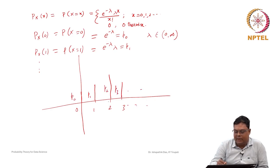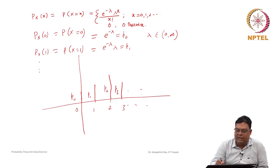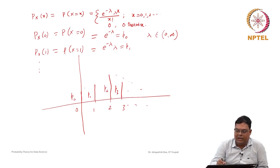If you draw the probability curve with the random variable values 0, 1, 2, 3 on the x-axis and probabilities p0, p1, p2, p3 as heights, you can observe that for different values of lambda, the maximum probability occurs near lambda. It is a unimodal distribution — unimodal means one mode, where the probability is maximum. The curve is increasing then decreasing.